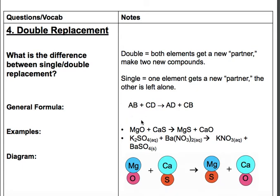So if you look at the formula here, you'll see we have AB plus CD yields AD plus CB. So the B and the D actually switch places. So I took the B and put it here, put the D, put it here.